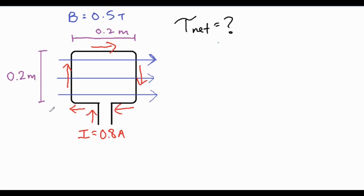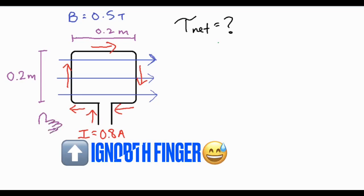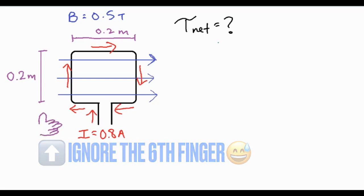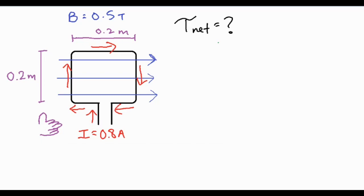Then our hand is going to look something like this: thumb pointing up, fingertips pointing to the right, and our palm is going to be facing down into the page. You can see that the thumb is pointing up with the current, the fingertips are pointing to the right with the magnetic field, and your palm will be facing down. So that means the force is going to be applied inward.